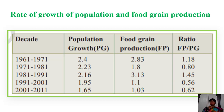The relationship between population growth and food grain production: if food grain production increases simultaneously with population growth, there is no problem. But if food production is less, the people of that country suffer from scarcity of food, they get many diseases, and ultimately the development of the country also declines.